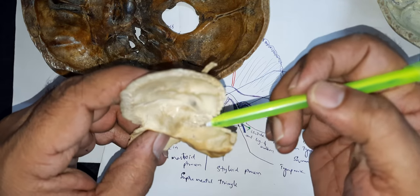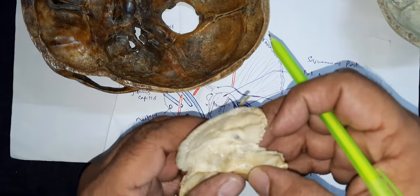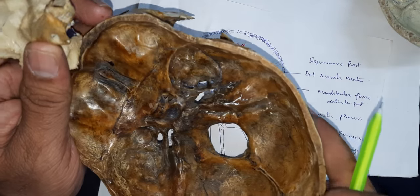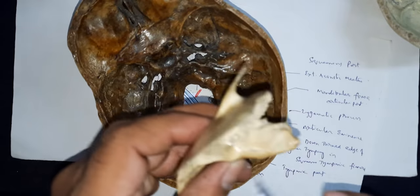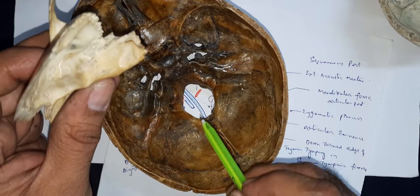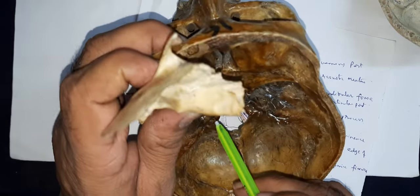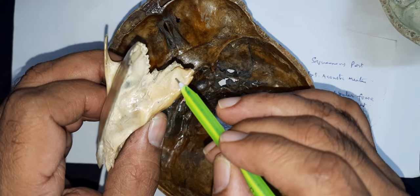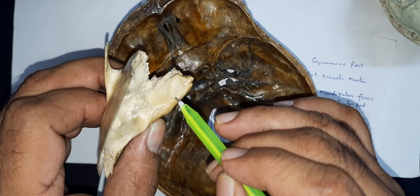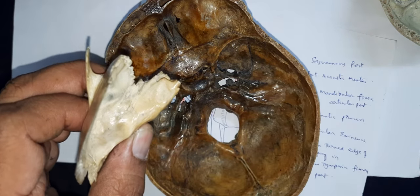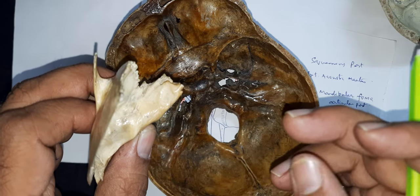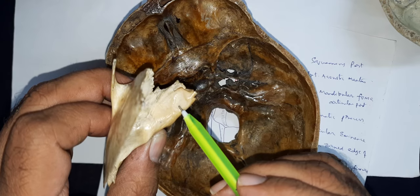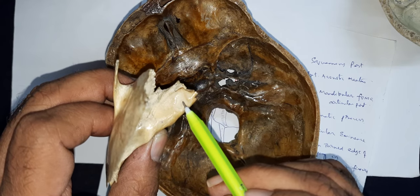If you see the anterior surface of this petrous temporal, very near to the apex, there is a triangular depression — this is called the trigeminal impression. The trigeminal ganglion is a crescent-shaped ganglion of the trigeminal nerve, which stays in a fold of dura mater called Meckel's cave.